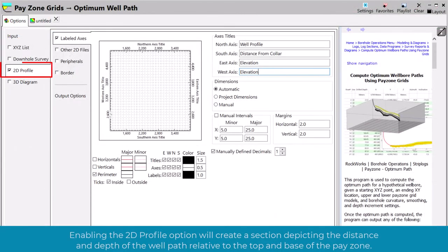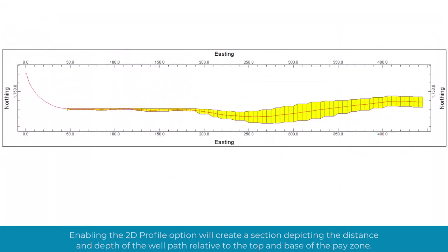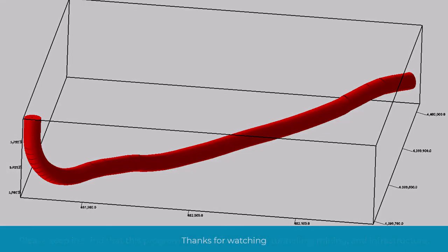Enabling the 2D Profile option will create a section depicting the distance and depth of the well path relative to the top and base of the pay zone. Please keep in mind that this program may also be used for tunneling, mining, and infrastructure. Thanks for watching.